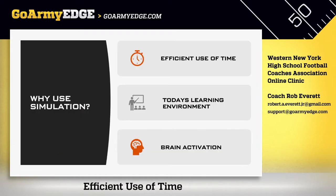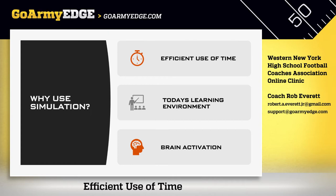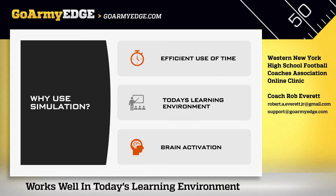The first reason to use simulation is efficiency. The things you'll do in simulation are things you're already doing — walk-throughs, installs, watching film. But how many times have you watched a film clip and said 'we're going to look exactly like this except we'll be on the other hash'? This tool gives you the ability to put up exactly what you want. I helped Rob Kern with defensive stuff — I could literally draw a play and text it to him. More efficient than searching for the perfect clip.